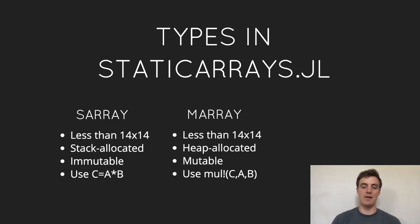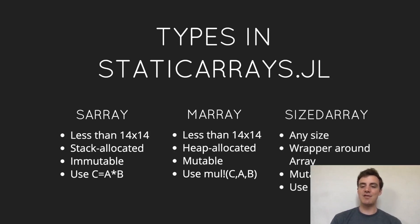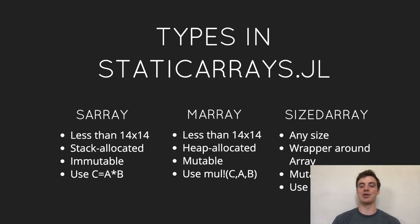The mutable counterpart is the MArray, which is allocated on the heap. To ensure no allocations when using these, you want to use the in-place matrix multiplication function. There's also the SizedArray, which is less talked about — it's really just a wrapper around the regular Julia array. It doesn't have the same size restrictions as the other two, which makes it very beneficial, and it's actually what we ended up using in our code base.